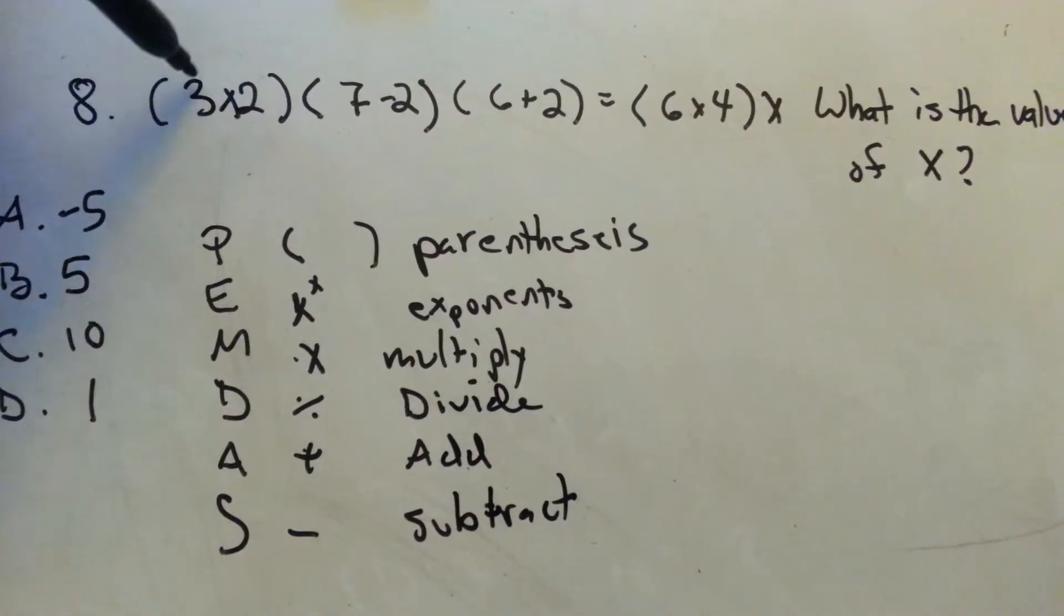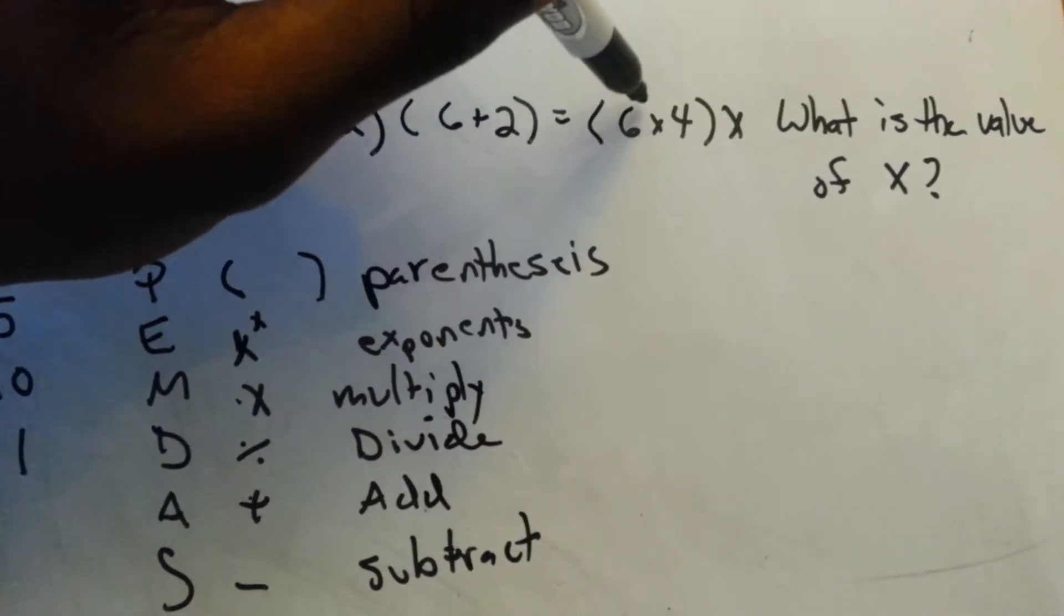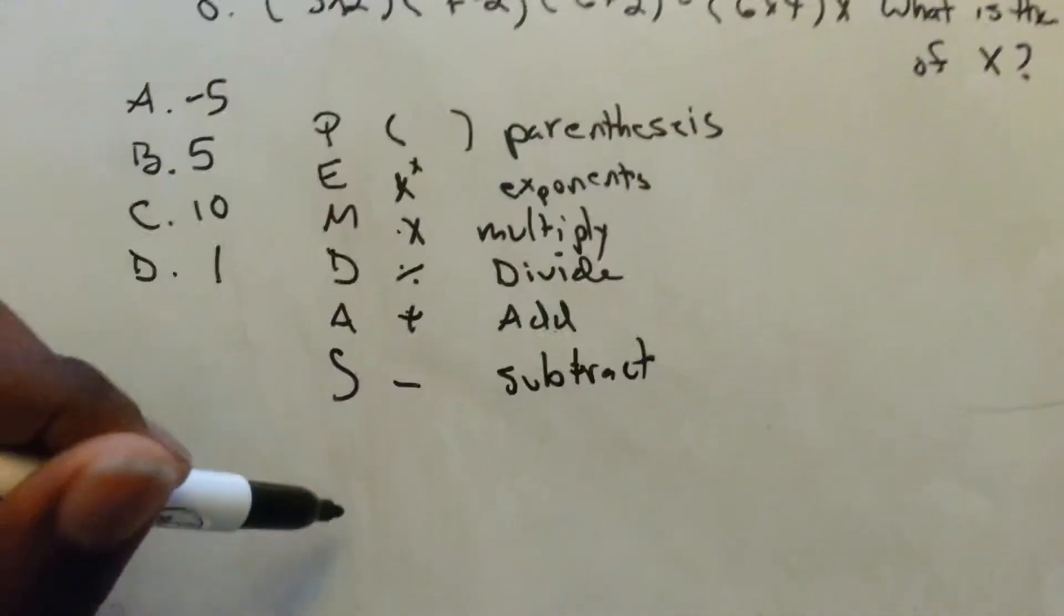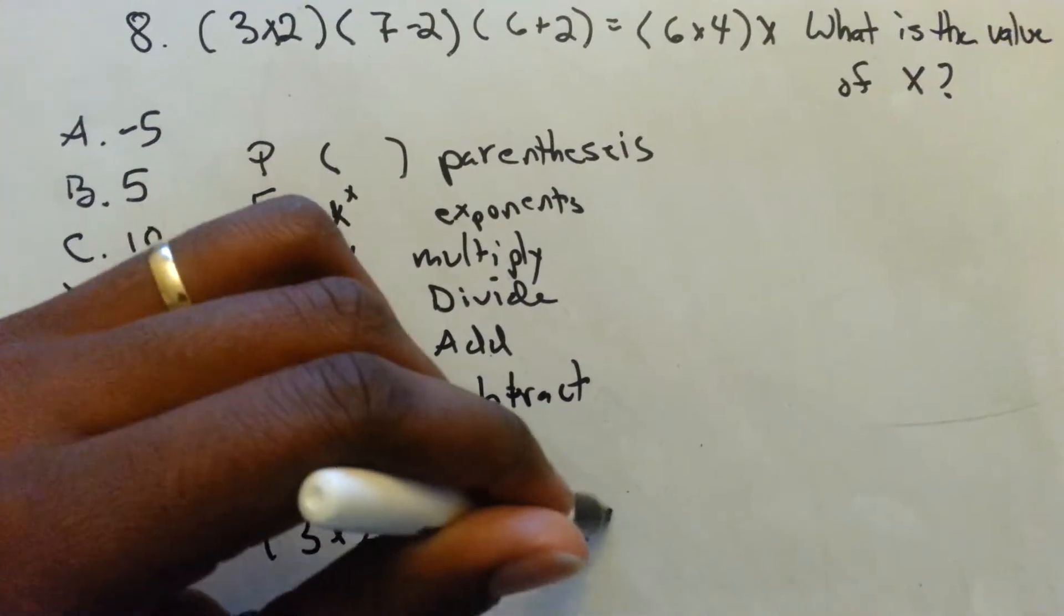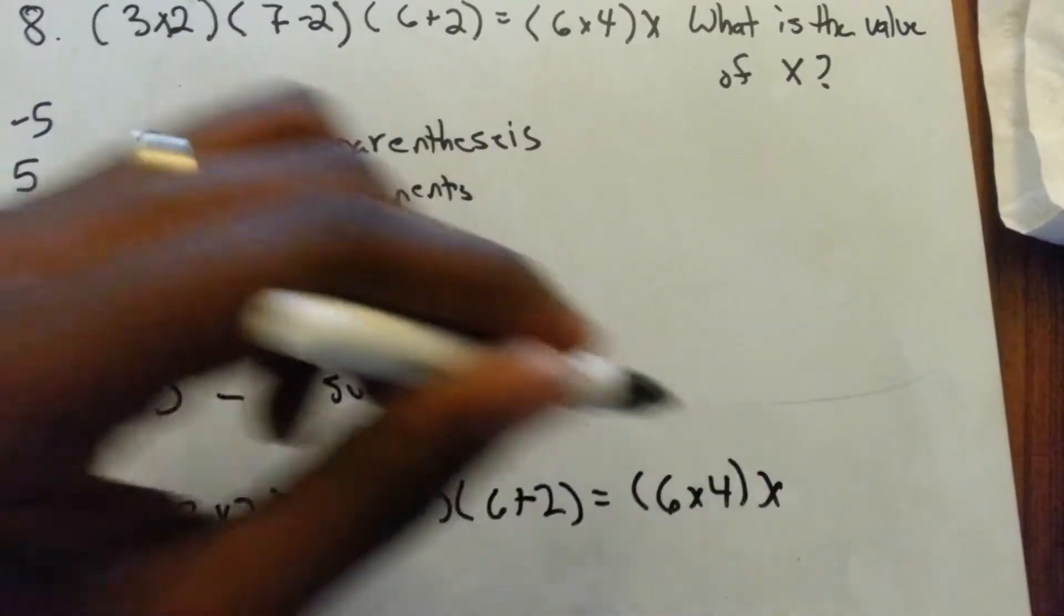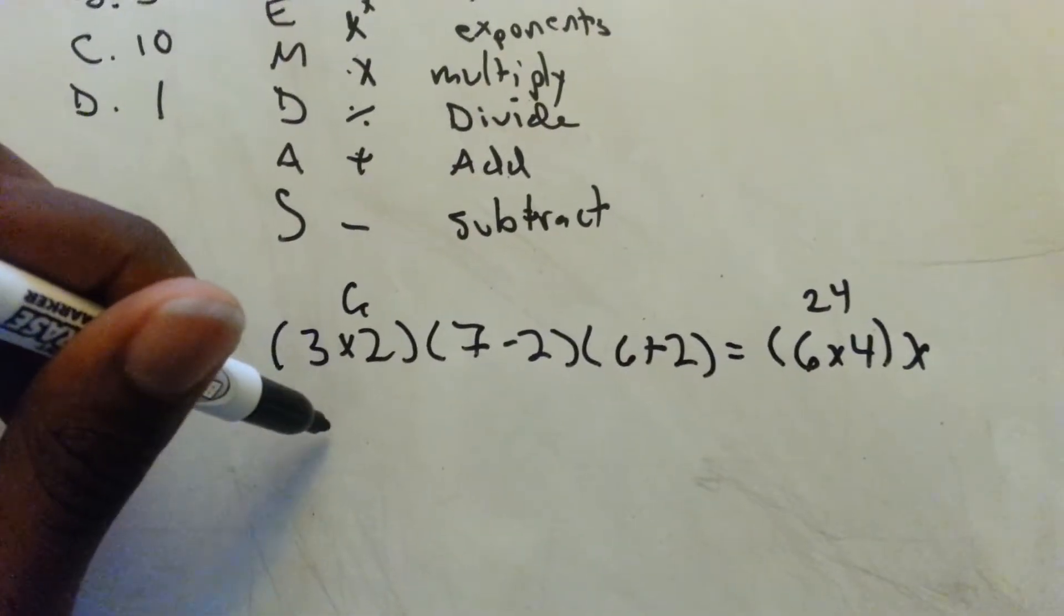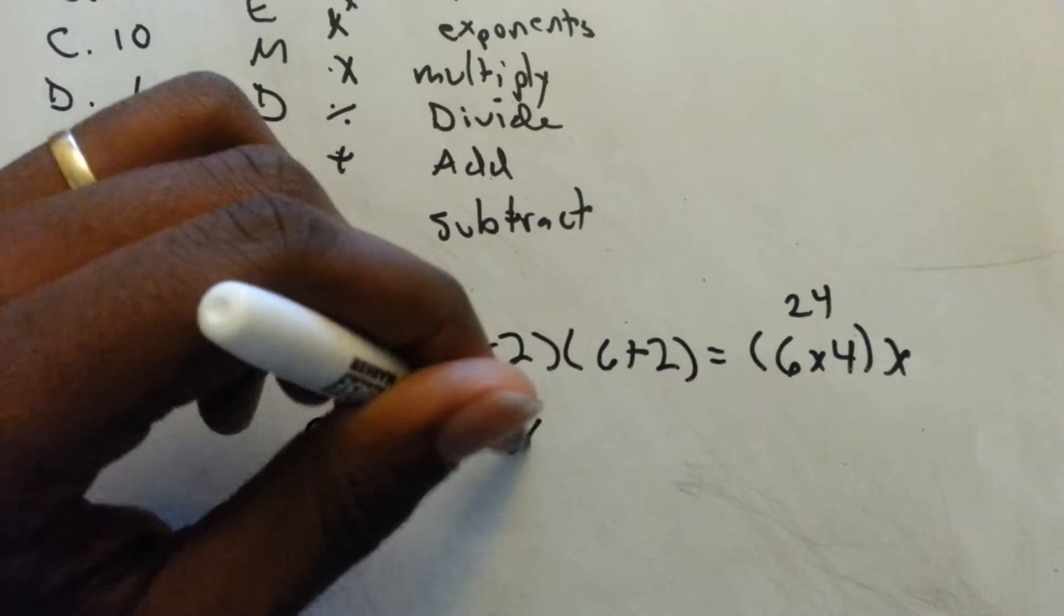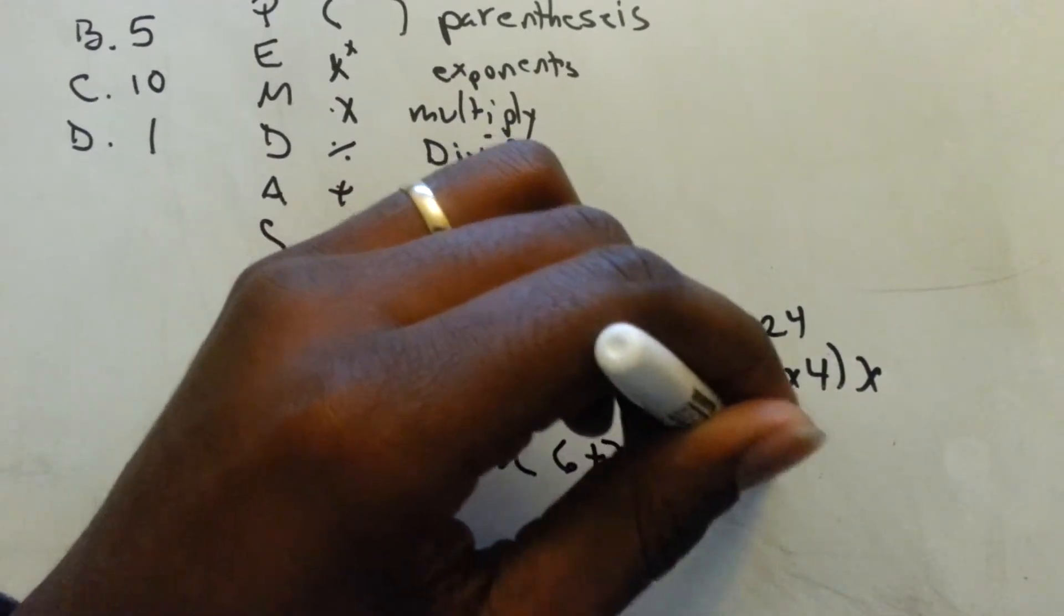So go through, do the multiplication. Three times two is six. Other multiplication inside the parentheses is six times four is 24. So I'm going to rewrite this down here. Three times two, seven minus two, six plus two equals six times four, x. So we did the multiplication here and we did the multiplication here.